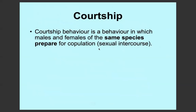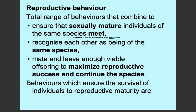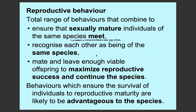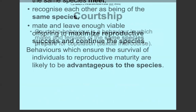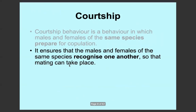Courtship is a behaviour in which males and females of the same species prepare for copulation. It's not the actual act of copulation, but it's how they meet, how they recognise each other, and then how they mate afterwards. Courtship ensures that the males and the females of the same species recognise each other.